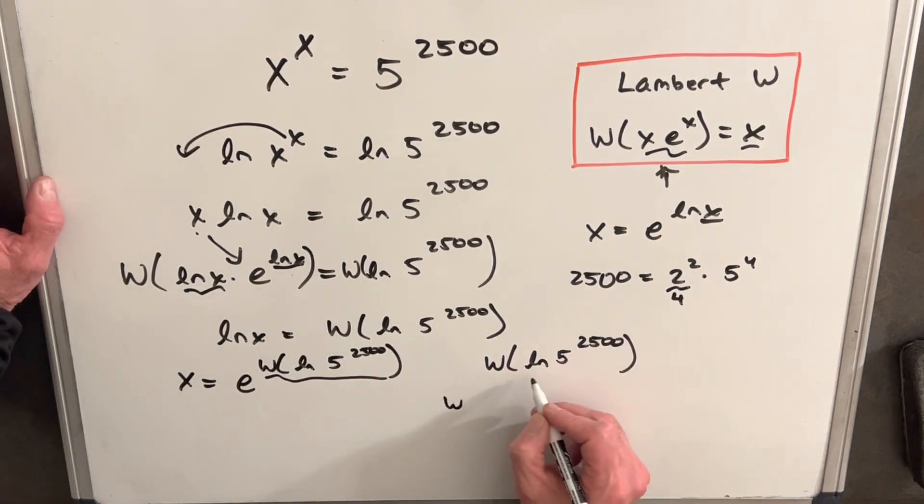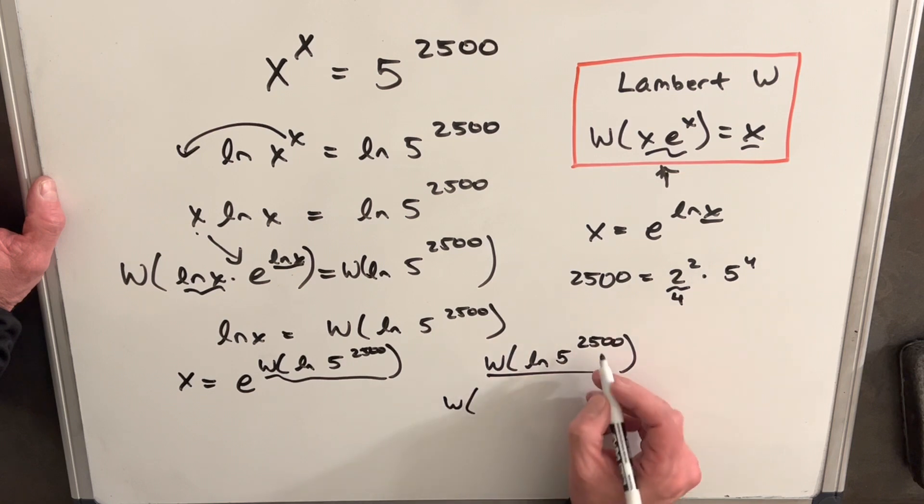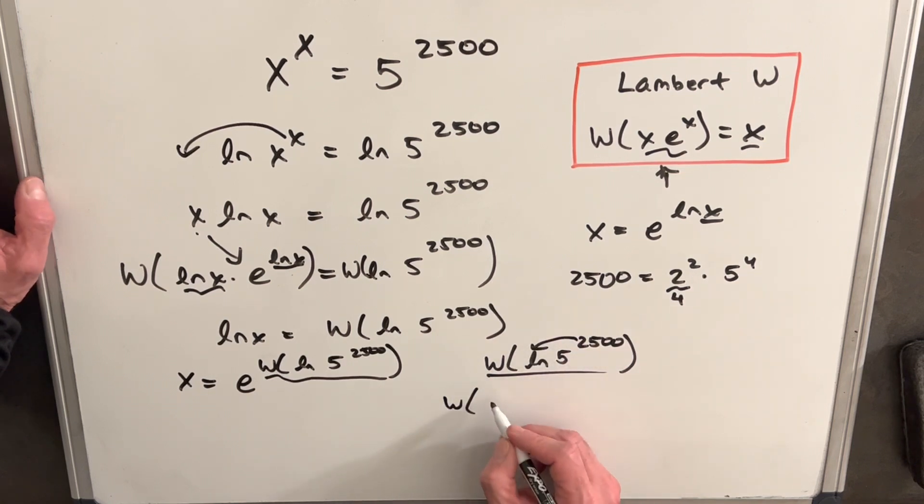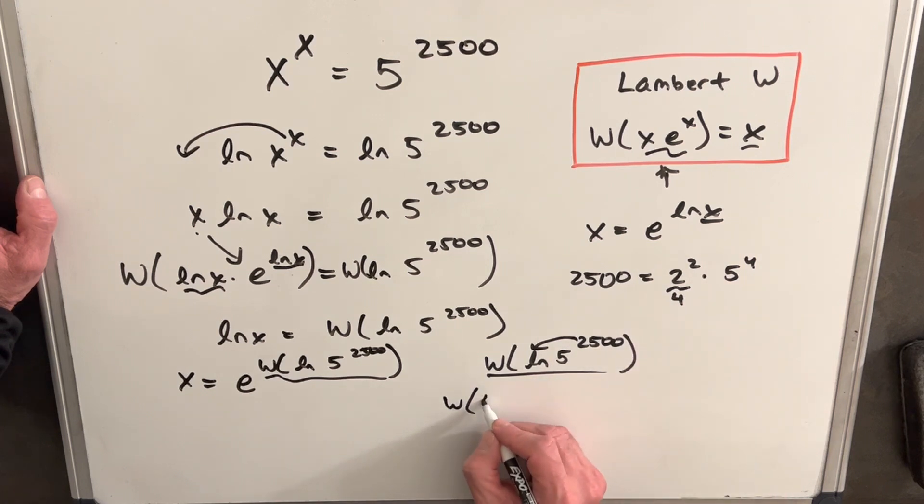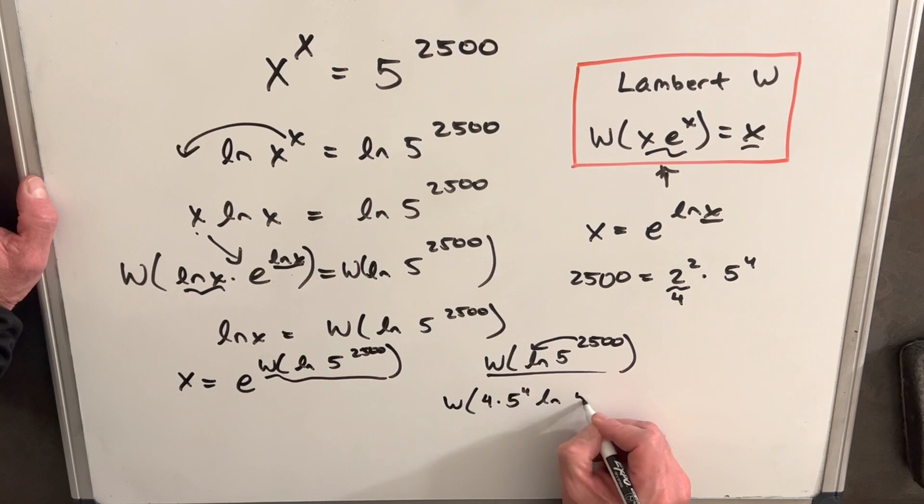So what I can do, let's rewrite this. And we'll bring, we can bring the 2,500 up front. But then I'm going to use this factorization. So we're going to write this as 4 times 5 to the 4th ln 5.